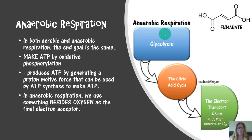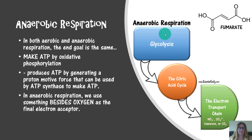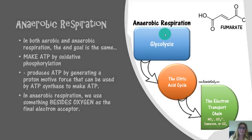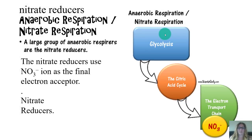In both aerobic and anaerobic respiration, the end goal is still the same: to make ATP by oxidative phosphorylation, which produces ATP by generating a proton motive force used by ATP synthase. Another important group of anaerobic respirers are the nitrate respirers — a large group that uses nitrite as the final electron acceptor.